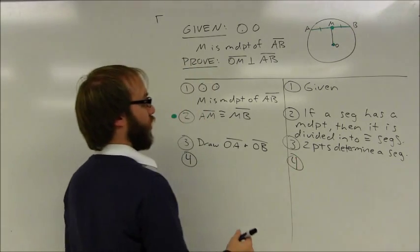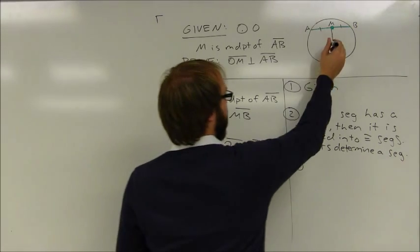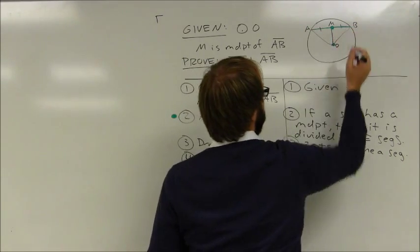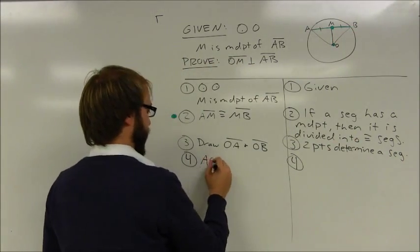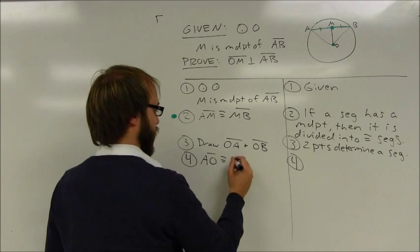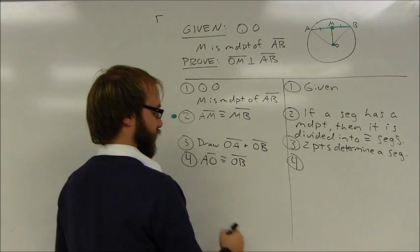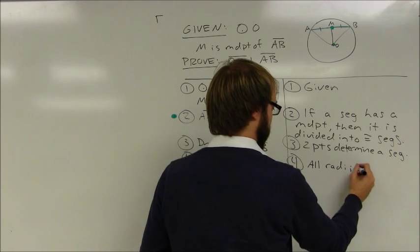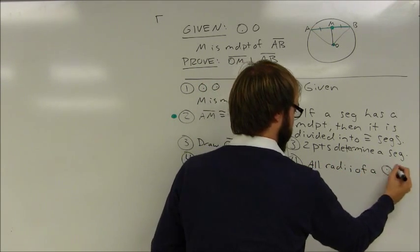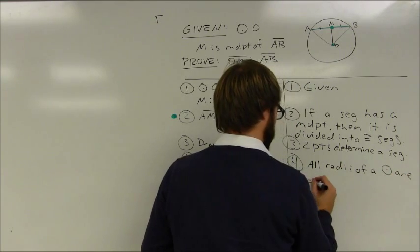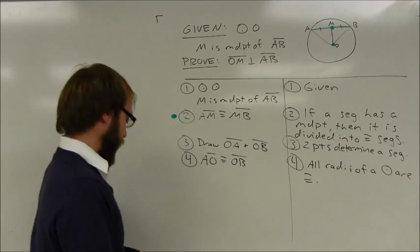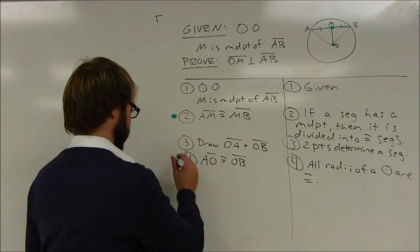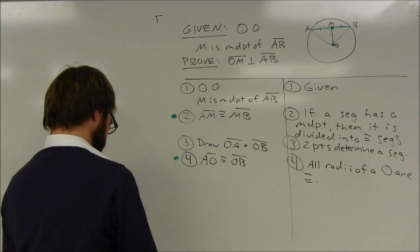Once I do that, I know that those two segments are congruent to each other. So I'm allowed to draw in those two segments there. I know that AO is congruent to OB. And of course, the reason is all radii of the circle are congruent.